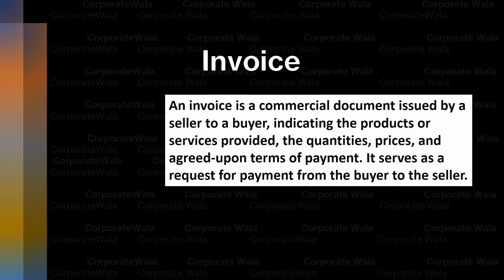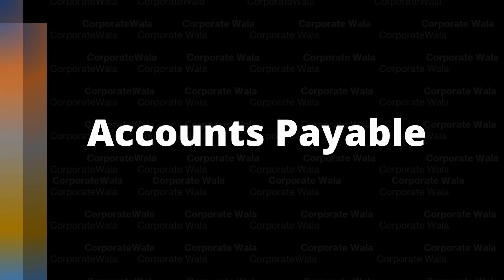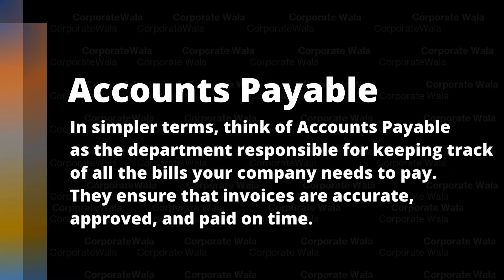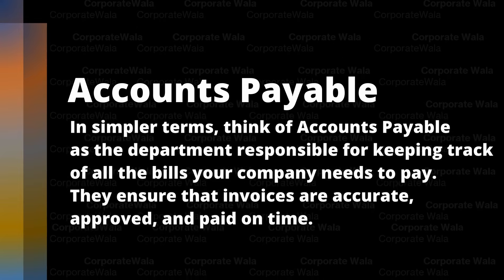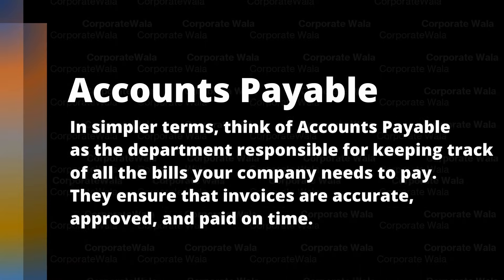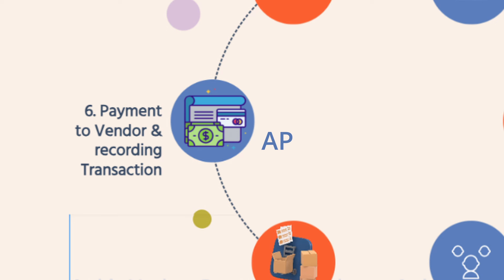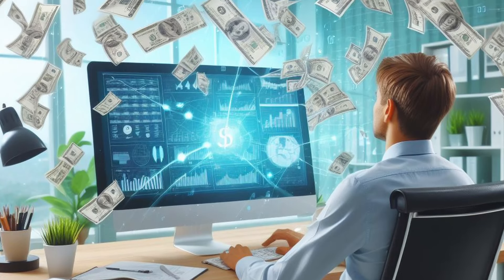Once the company receives the invoice, this is where Accounts Payable comes into the picture. It is a specific subset of the P2P process that deals with managing and paying invoices. So P2P is the entire cycle from purchasing to vendor payment, but Accounts Payable is only a subset or sub-process of P2P, specifically dealing with managing and paying invoices.